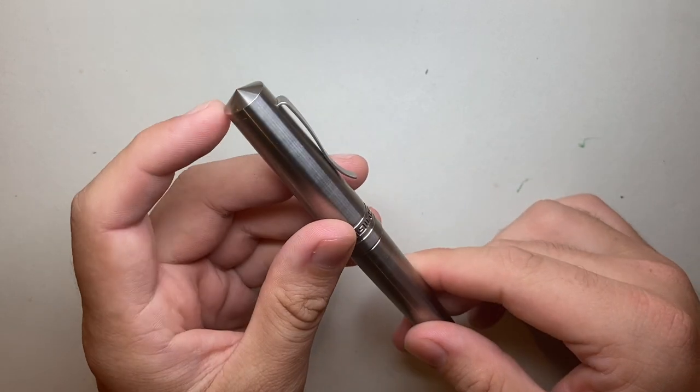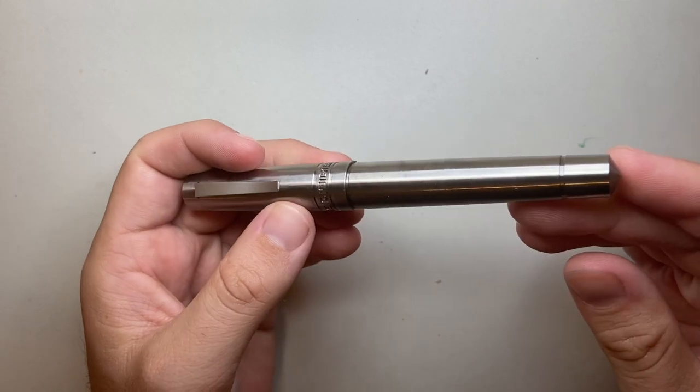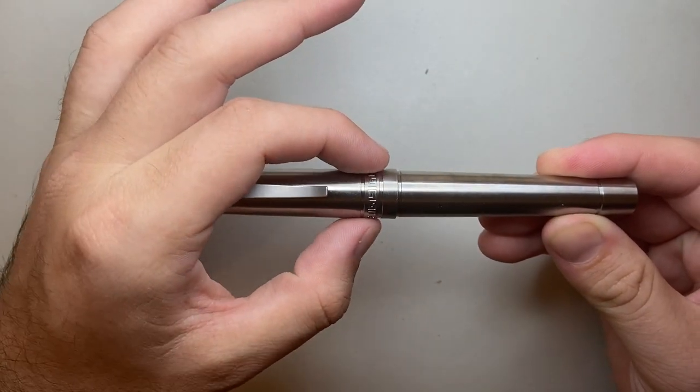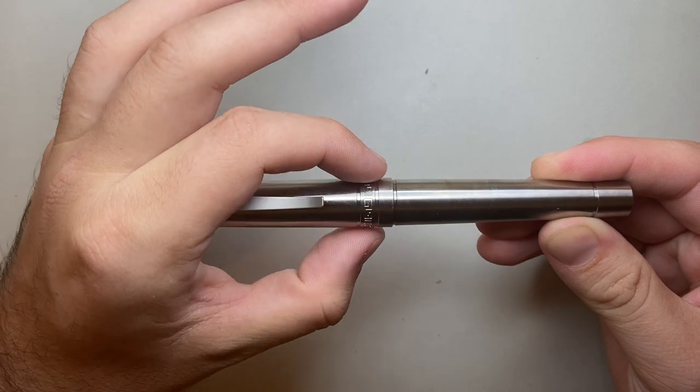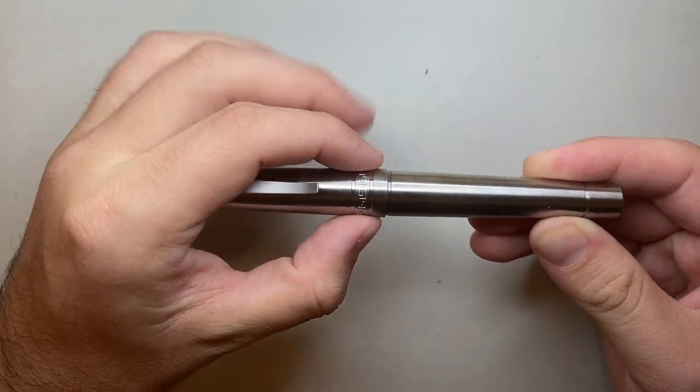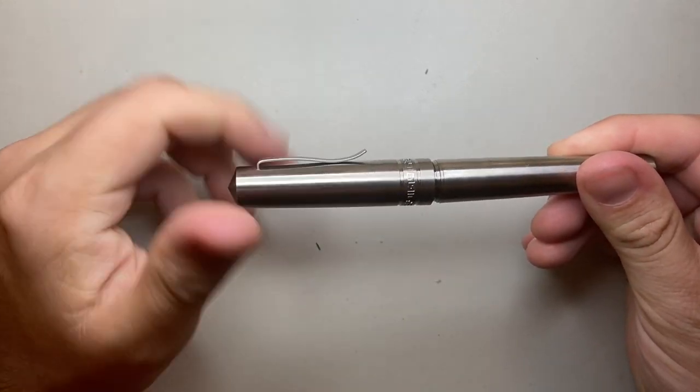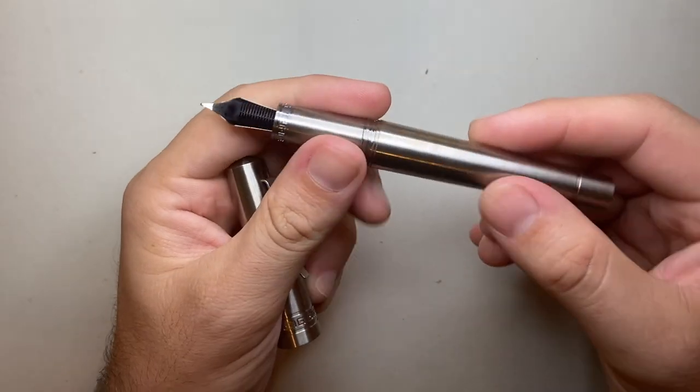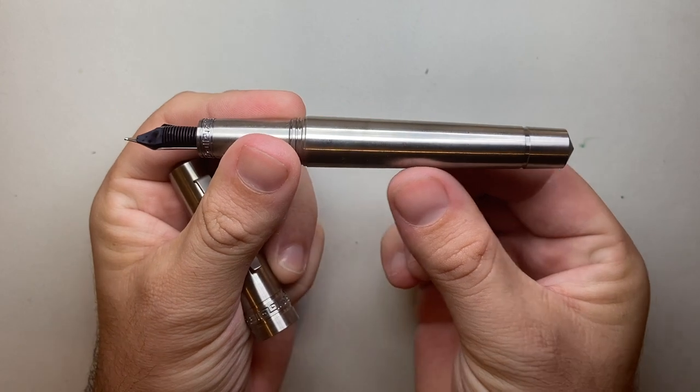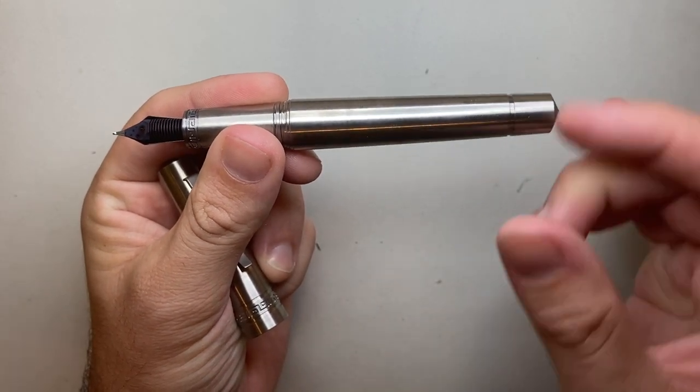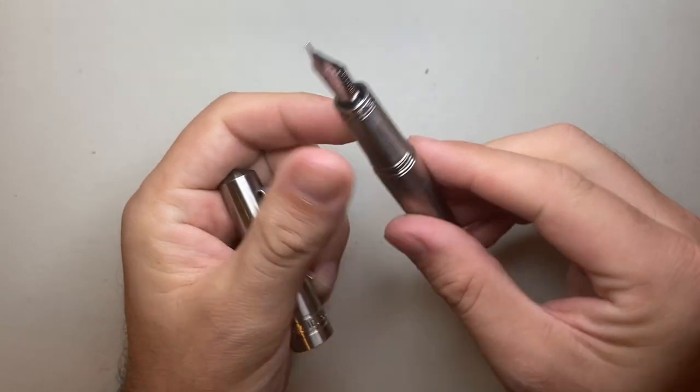Peaked finials, the body swells out slightly to this engraved or cut-out band on the edge of the cap. The cap unscrews in one and a half turns, and then the barrel of the pen tapers down to another groove and then the final peaked finial.